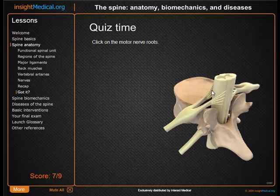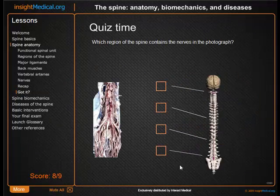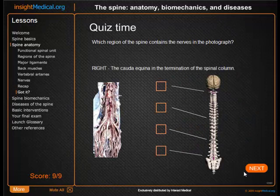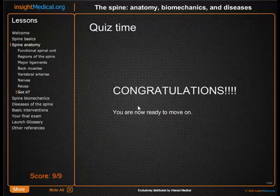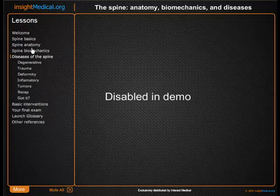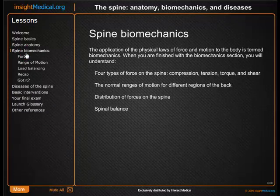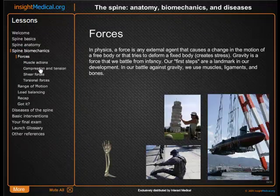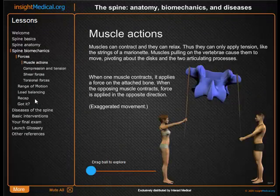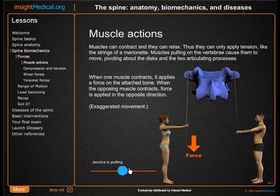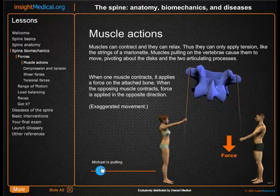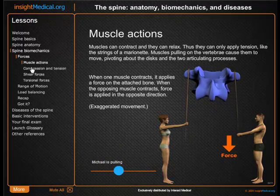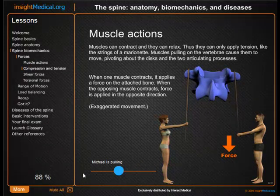The motor nerve roots are anterior because they have greater protection there. Congratulations — we're ready now to move on to the next section of spinal biomechanics. And here we have fun things to learn about basic muscle actions, compression and tension.